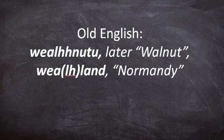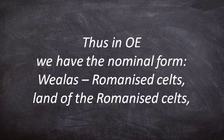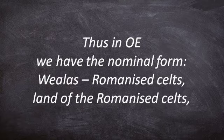Hence the term Waelhland. In Old English, we have the nominal form Waelhlas, meaning essentially Romanized Celts, or land of the Romanized Celts. One should bear in mind that in this time, the name of a country was named after the people that inhabited that piece of land.